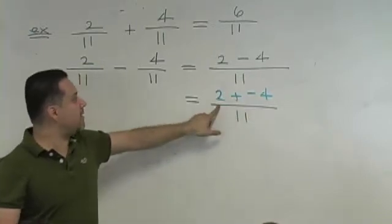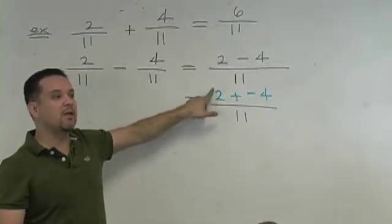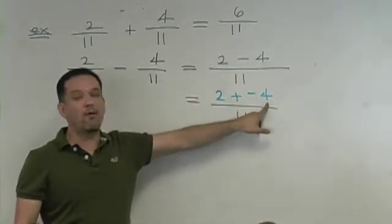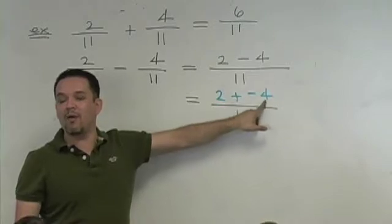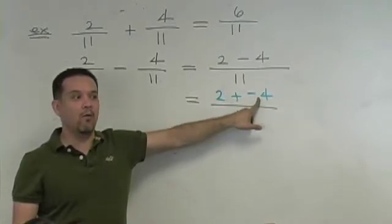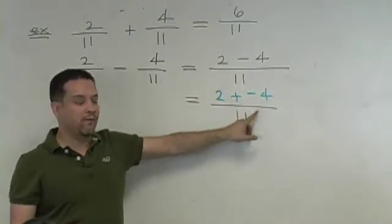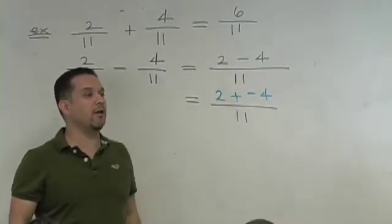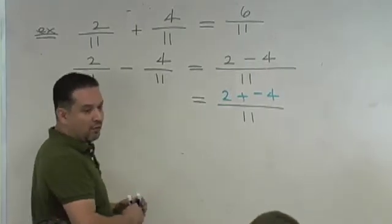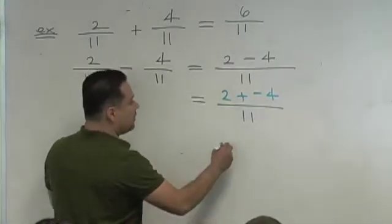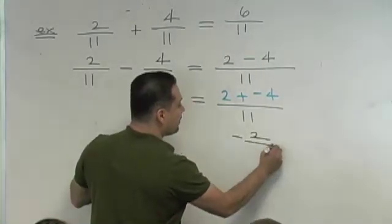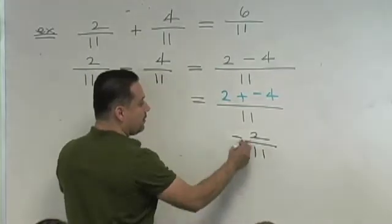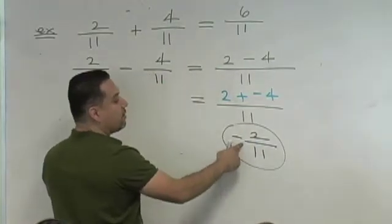You see this positive two value? That represents money you have. You see this negative four? That's money you owe. So if you had two dollars but yet you owed four dollars, what's the story? You still owe two dollars. And that's how you got the numerator. So you're right. It's negative two over eleven.